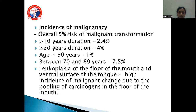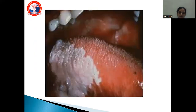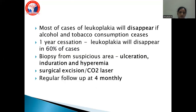This classic picture shows a white patch on the lateral tongue. Most cases of leukoplakia disappear if alcohol and tobacco consumption ceases — one-year cessation results in resolution in 60% of cases. Biopsy from suspicious areas showing ulceration, induration, and hyperemia should be done. Surgical excision or CO2 laser can be used, with regular follow-up at 4-month intervals.